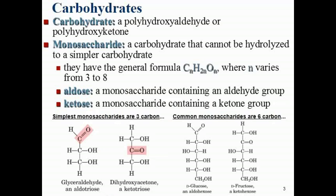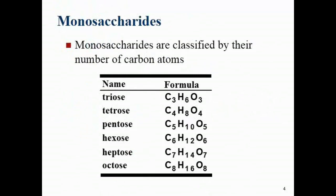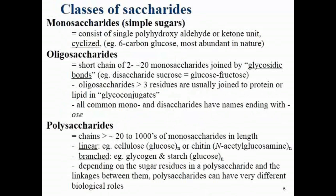Monosaccharides are classified based on the number of carbons: trioses (C₃H₆O₃), tetroses with four carbons, pentoses such as ribose with five carbons (C₅H₁₀O₅), hexoses such as glucose and fructose with the formula C₆H₁₂O₆, heptoses with seven carbons, and octoses with eight carbons. Monosaccharides consist of polyhydroxy aldehydes or ketones and are usually present in a cyclized form.